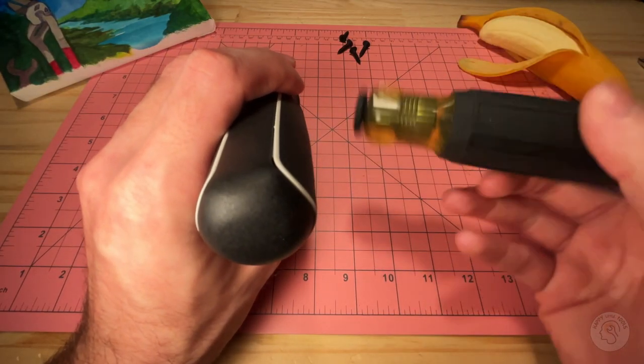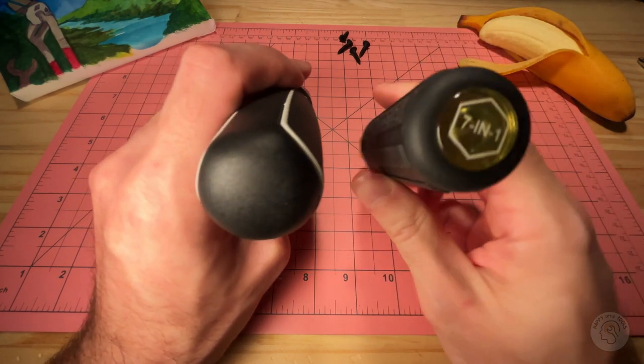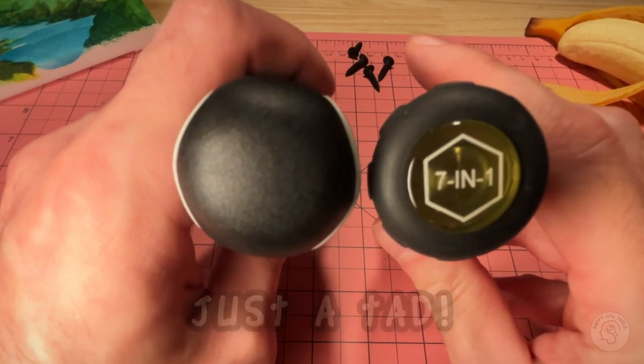In a previous review I did the Klein 7-in-1 socket kit, the flip socket kit, and you can see the size - it's a tad bigger than that.